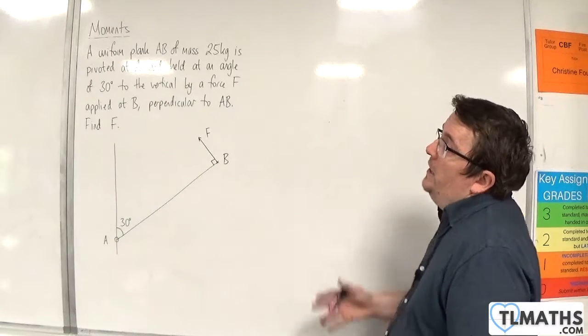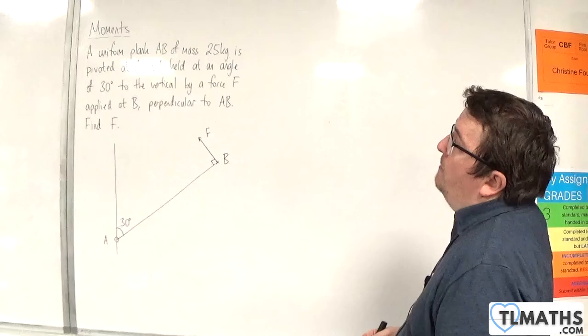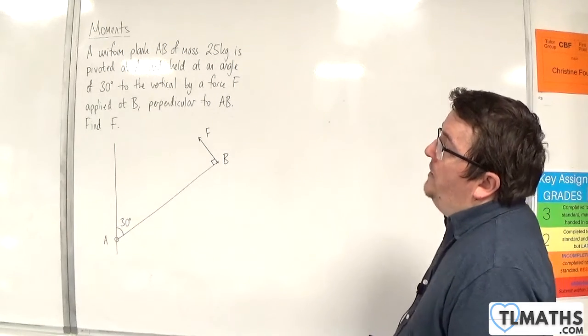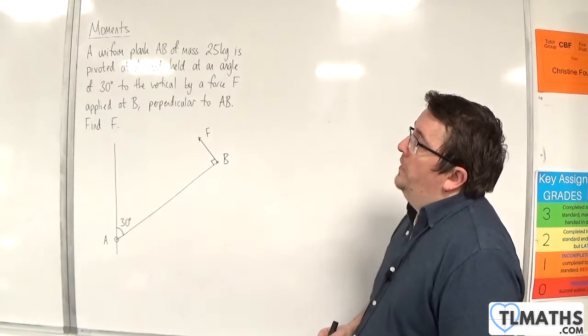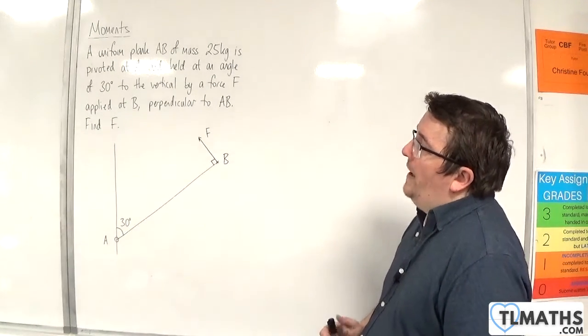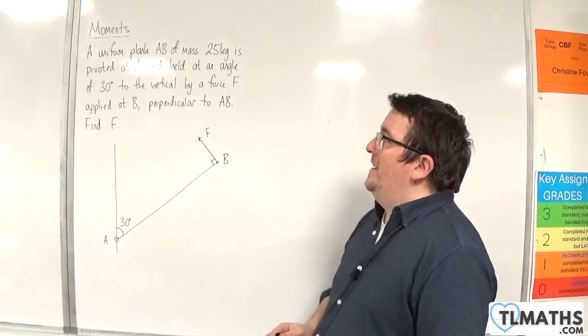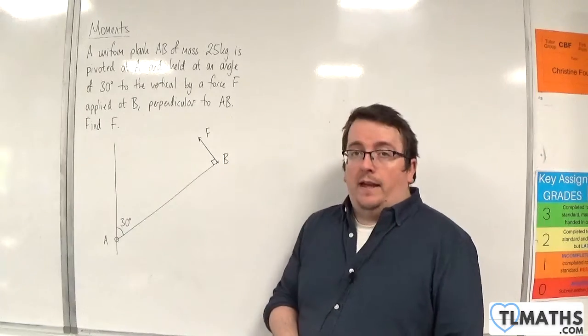So in this video, we have a uniform plank AB of mass 25 kilos pivoted at A and held at an angle of 30 degrees to the vertical by a force F applied at B, perpendicular to AB. Find F.